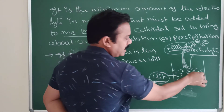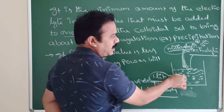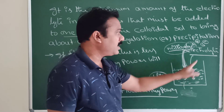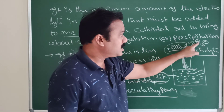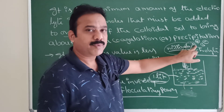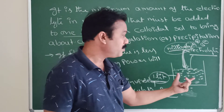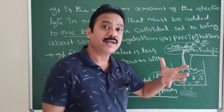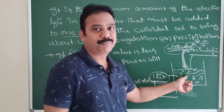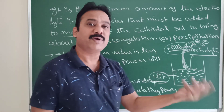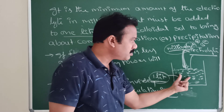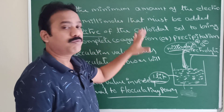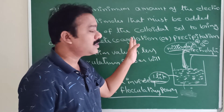If it is a negative colloid, then the positive ions cause coagulation. If it is a positive colloid, then the negative ions cause coagulation. Flocculation value is inversely proportional to flocculating power — the more powerful the electrolyte, the lower its flocculation value. This is the concept of flocculation value and coagulation value.